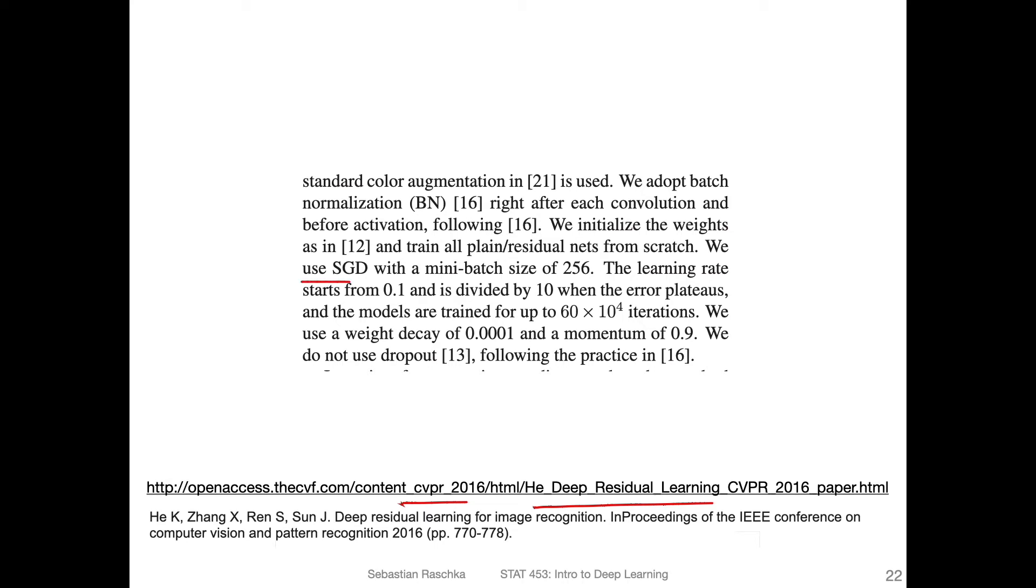So what they do is, they use regular SGD with a mini batch size of 256. And then they start with a learning rate of 0.1, which is actually quite large for SGD. They start with 0.1 and then divide by 10 every time when the error plateaus. So essentially, if they do the training and notice that the loss doesn't further go down, I mean, of course, there's some wiggle room. So if it stays within a certain margin, then they divide the learning rate by 10.